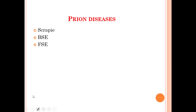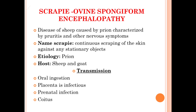Moving on to prion diseases: prions cause three diseases — Scrapie, BSE, and FSE. Scrapie is Ovine Spongiform Encephalopathy. BSE is Bovine Spongiform Encephalopathy. And FSE is Feline Spongiform Encephalopathy. First we will discuss about Scrapie, that is the Ovine Spongiform Encephalopathy.